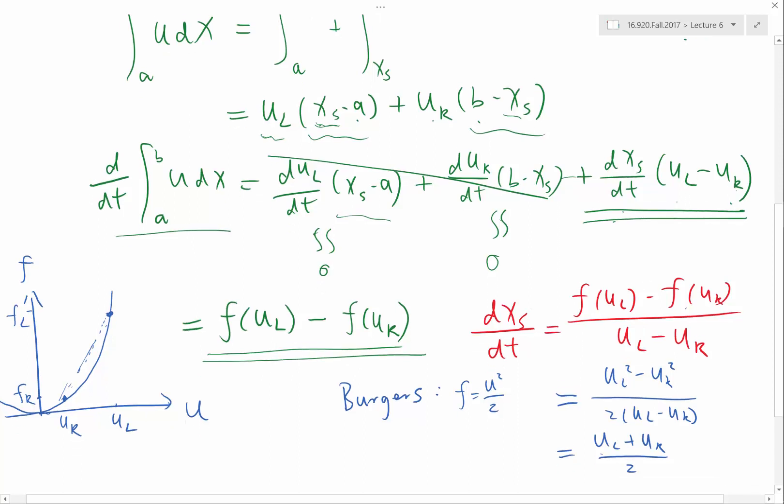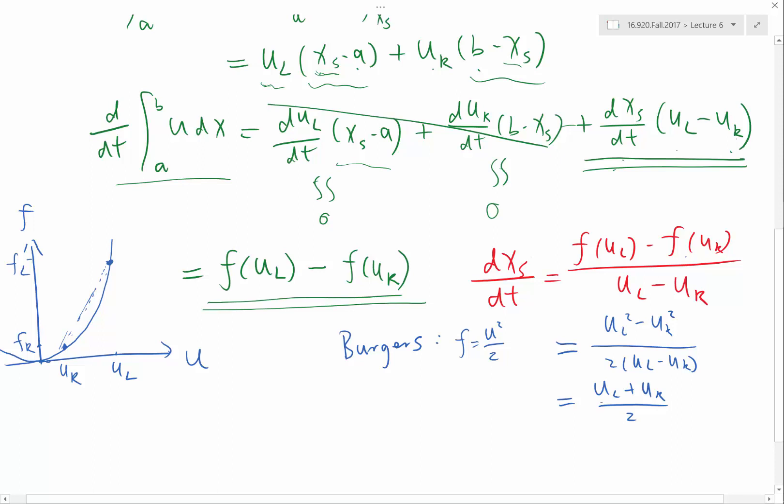While if you remember, in the smooth regions, the characteristic line, there is an interesting analogy. Characteristic speed is df over du. So the tangent of this line is where the smooth region characteristics would move. So in some sense, the shock wave is a generalization of a smooth region characteristic. Or you can also think the characteristic line in the smooth region is like an infinitesimal shock.